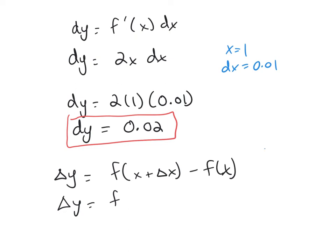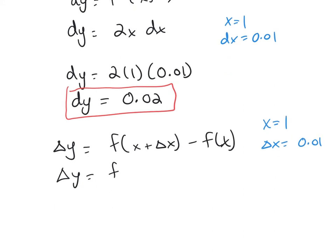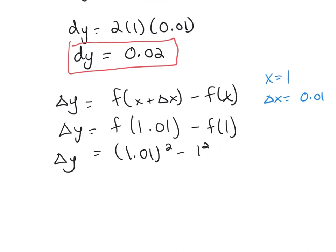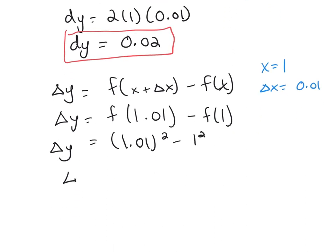remember here, x is 1, delta x we were told is 0.01. So here I'm getting f of 1.01 minus f of 1, so delta y will be 1.01 squared minus 1 squared. And if you get out a calculator to compute this, delta y will be 0.0201.